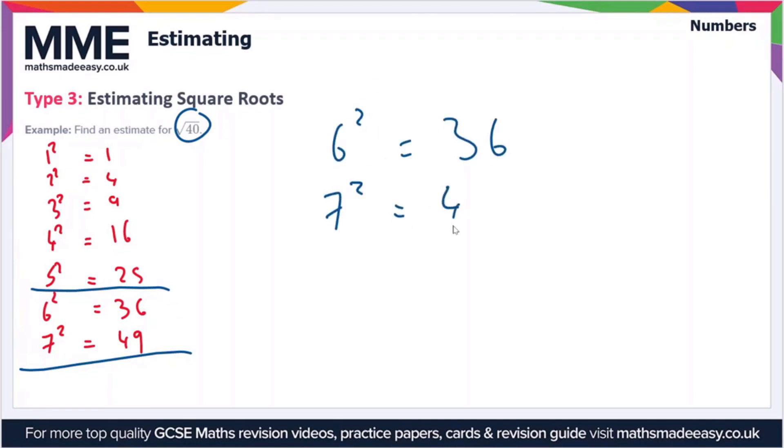7 squared equals 49. What's the difference here? We've got 40 and 36, so the difference between them is 4. And 7 squared, which is 49, the difference between 49 and 40 is 9.